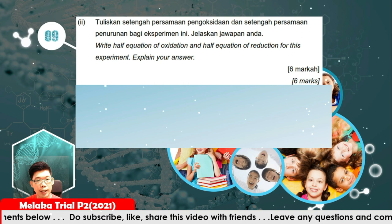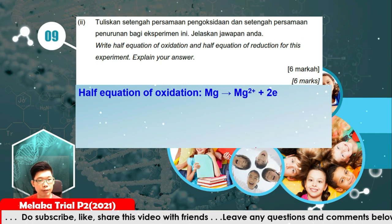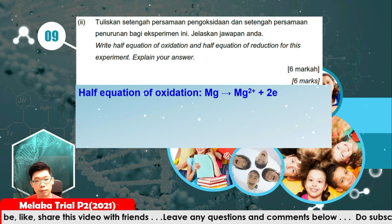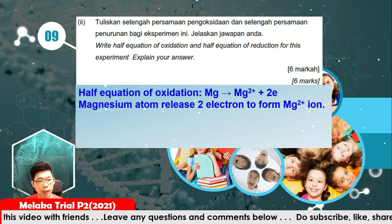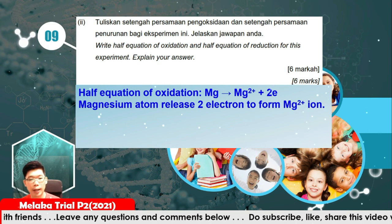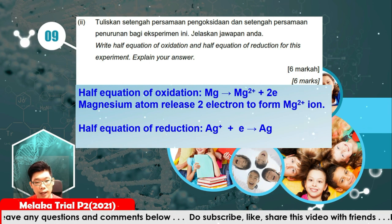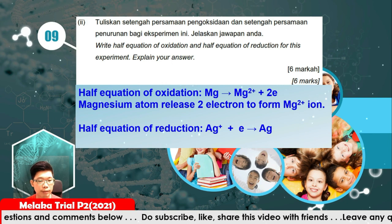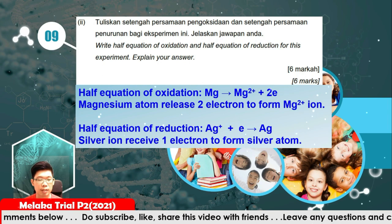Write the half equations. For oxidation: Mg → Mg2+ + 2e⁻ (magnesium atom releases two electrons to form magnesium ions). For reduction: Ag+ + e⁻ → Ag (silver ions gain one electron to form silver metal).